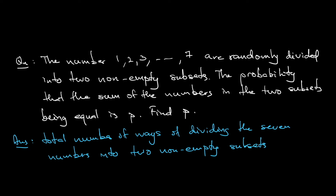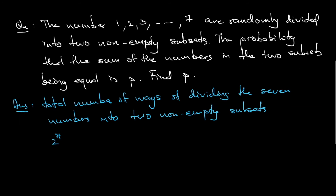Without the condition of the sum being equal first — you have seven numbers, so how many subsets would you have? If you have a set of seven numbers, how many subsets do you have? That would be 2 to the power of 7. 2 to the power of 7 will be the number of all the subsets.